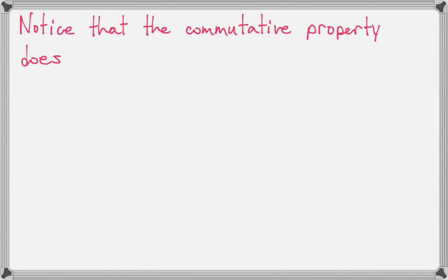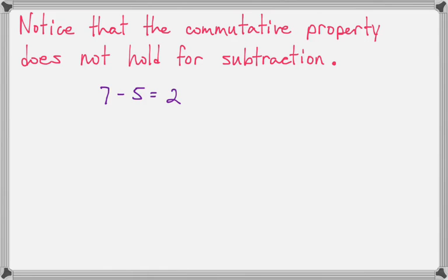Now notice that the commutative property does not hold true for subtraction. If you've ever had a checking account, you know this is true. Because if you have, for example, $7 and you take away $5, you've got $2 left. But if you have $5 and you take away $7, you don't have $2 left. Because changing the order of the subtraction changes the answer. So we do not have the commutative property for subtraction.